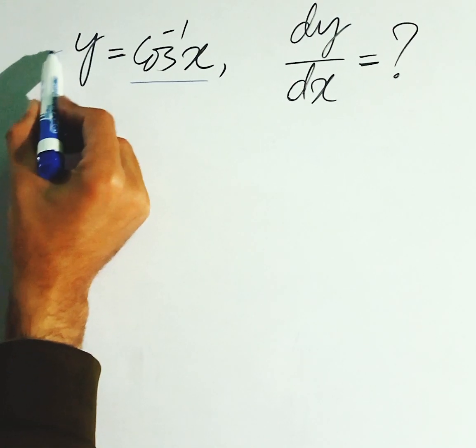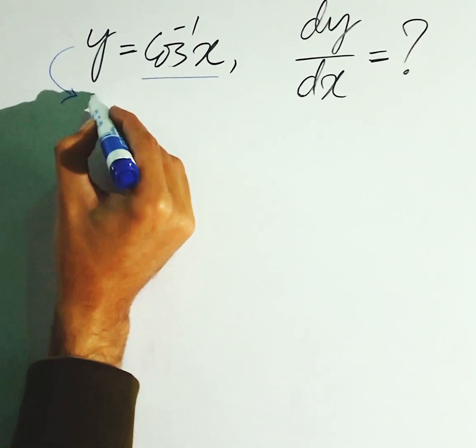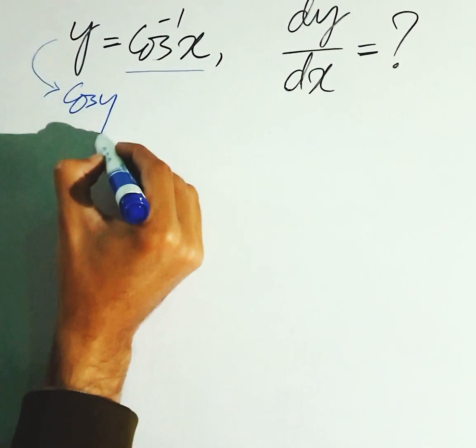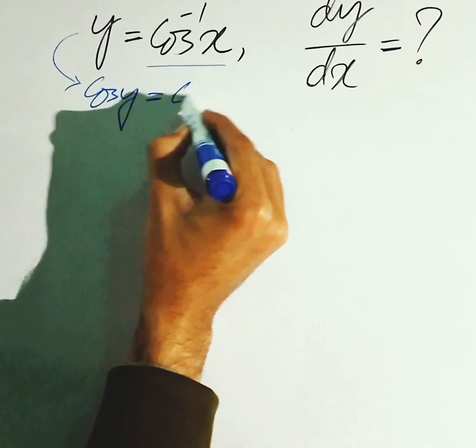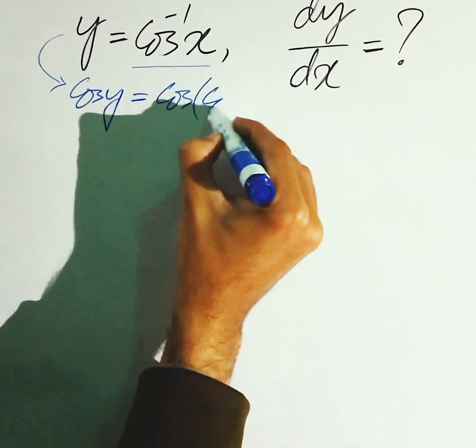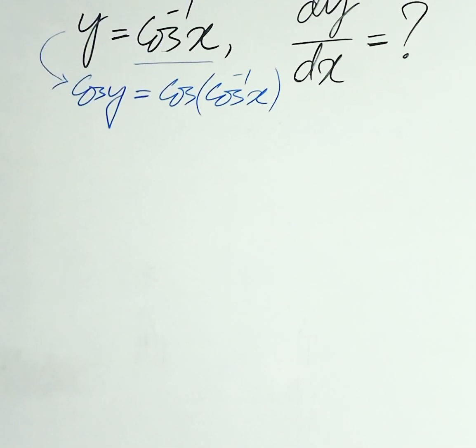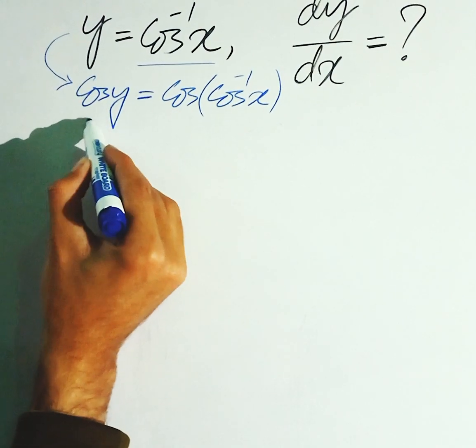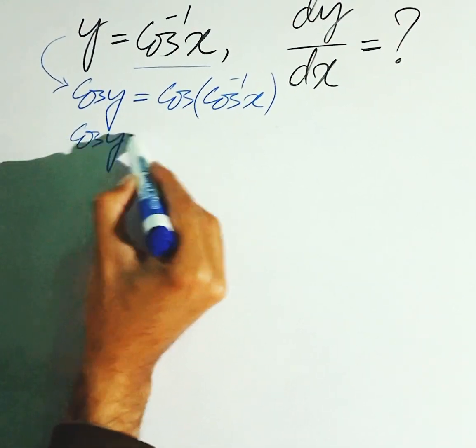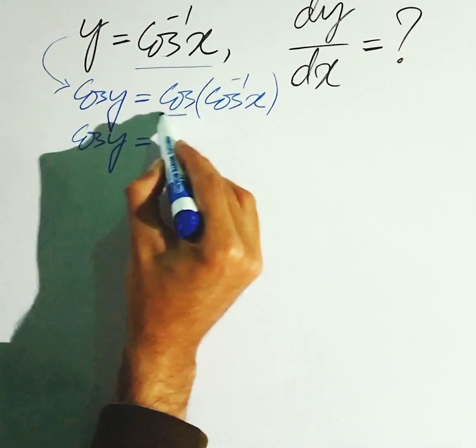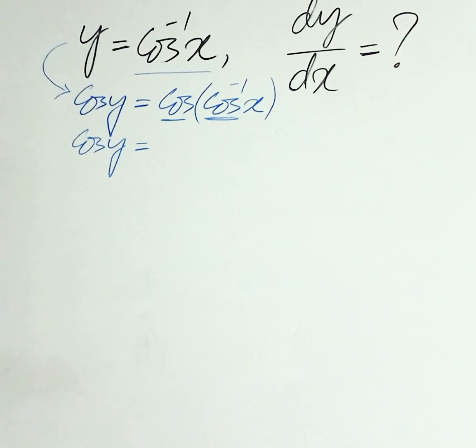Yahan pe cos apply kareem both side. So cos y is equal to cos of cos inverse of x. Cos y is equal to cos or cos inverse, hapus me inverse is in.